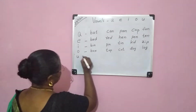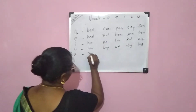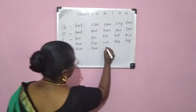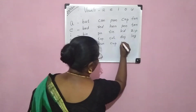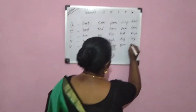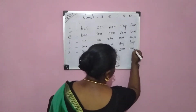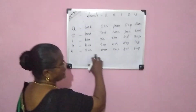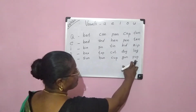U vowel sound. Words with the U vowel sound: sun, bun, cup, gun, pup. U vowel sound: sun, bun, cup, gun, pup.